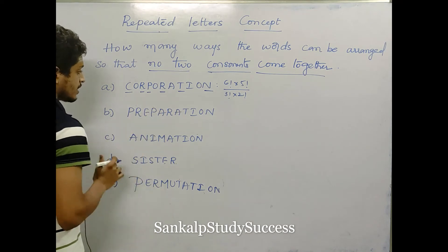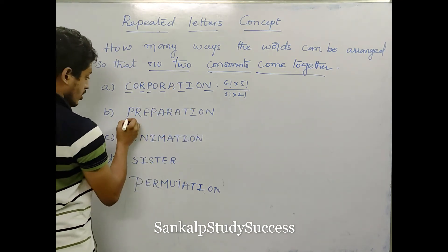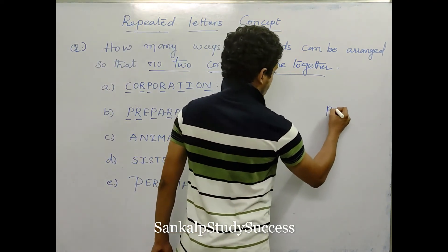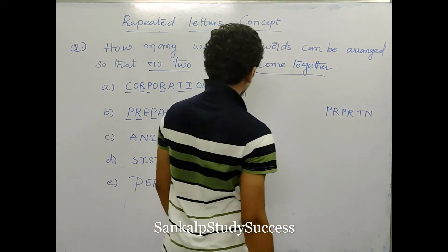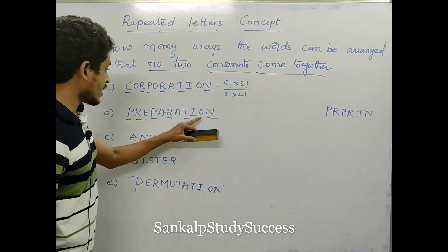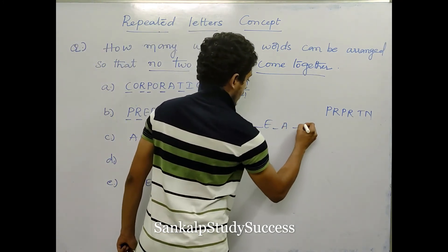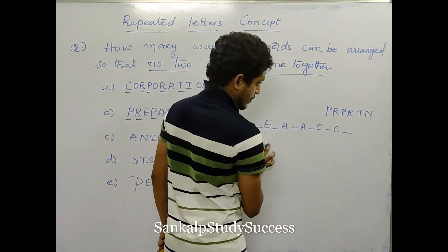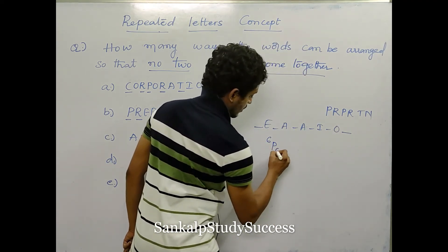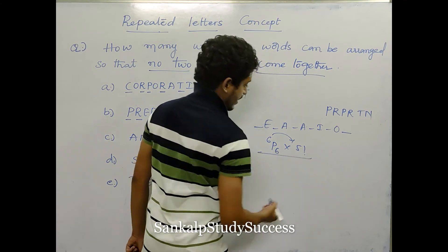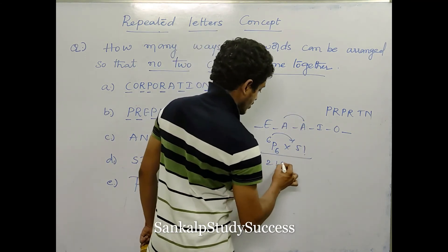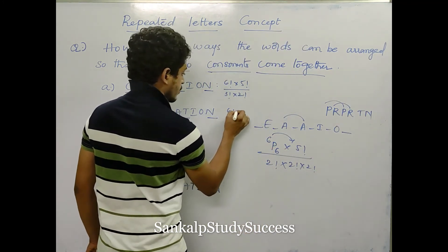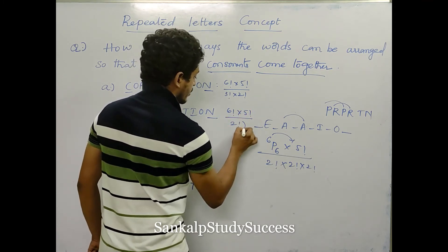For PREPARATION — no two consonants come together. The consonants are P, R, P, R, T, N — six consonants. The vowels are E, A, A, I, O — five vowels giving six places. Arrange 6 consonants: 6P6, into 5 factorial for vowels, divided by repeated letters: A repeats 2 times, R repeats 2 times, P repeats 2 times — each giving 2 factorial. Answer: 6 factorial into 5 factorial divided by 2 factorial whole cube.